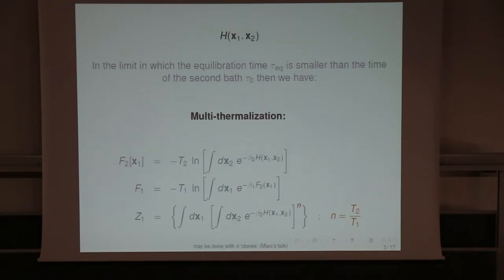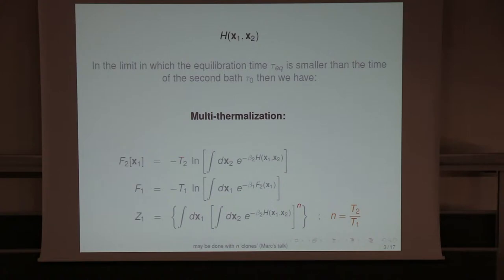If the conditions are given, you multi-thermalize. With a single bath, if the conditions are given, you thermalize, meaning that if it's a Langevin bath, you get to the Gibbs measure. If the conditions are given here so that the times are large and so separate, but note that the two temperatures of the two baths are different, you go not to the Gibbs measure but to this thing.